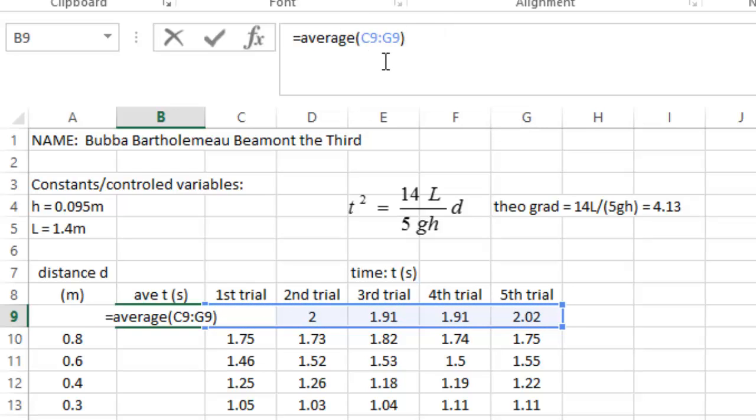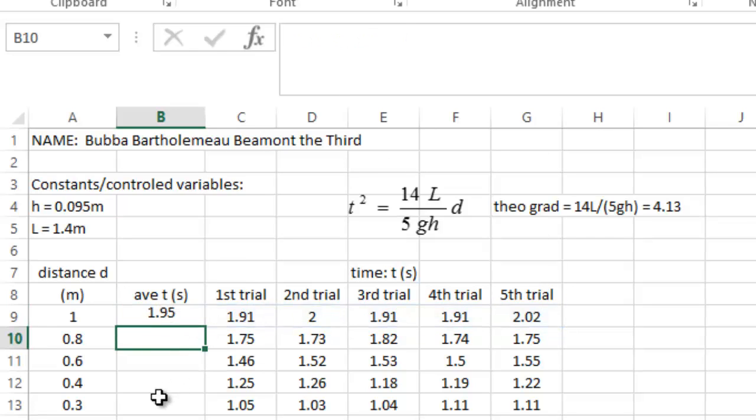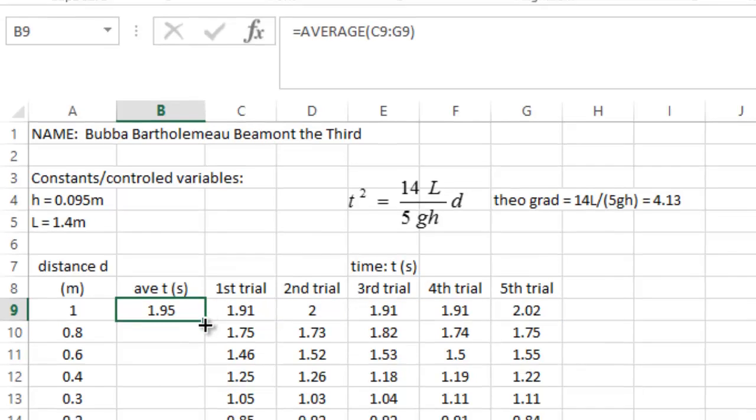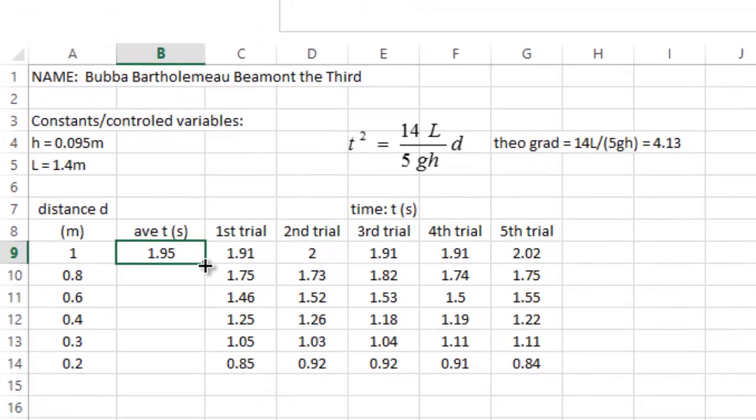Now look at the code up here at the beginning of the top of the Excel sheet. C9 to G9, C being the C column, 9 being the 9th row, G9. And basically that is how you do an average. You could drag the little bottom right corner and you can drag it down. So there's our averages.